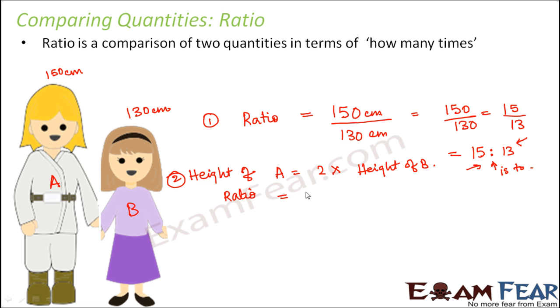So the ratio would be height of A, which is, let's assume that the height of A is x, then the height of B would be how much? So now we know that height of A is 2 times the height of B. So if height of B is x, height of A would be 2x. So therefore the ratio would be 2 by 1 or 2 is to 1.